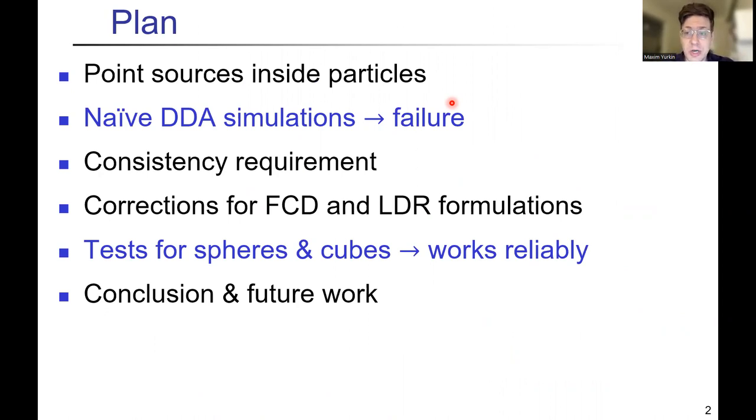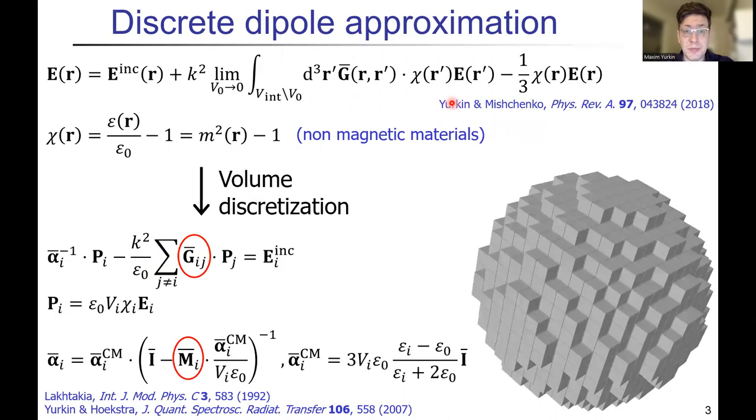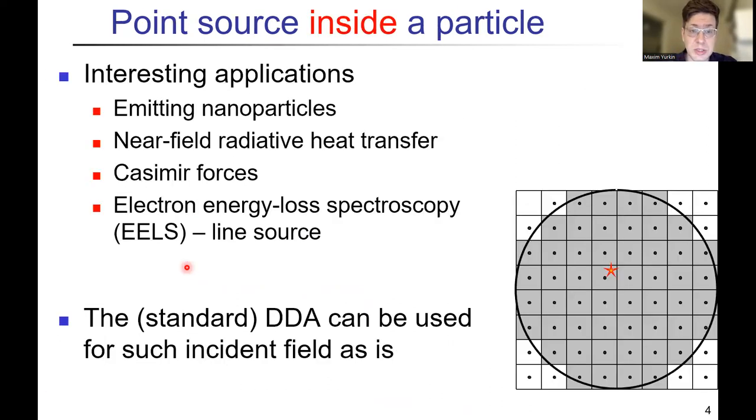Then I will try to correct and produce some reasonable results. The discrete dipole approximation is a volume discretization method, so you can use it for arbitrary and homogeneous particles. Important for the following is this equation, which shows how the dipoles inside the particle are connected to the incident field. And here you have this G_ij, which can have different formula expressions depending on the DDA formulation that we use.